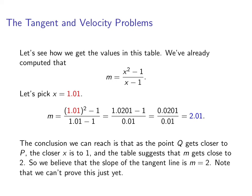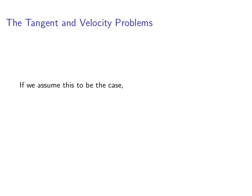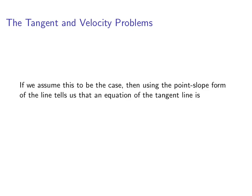Now we can't prove this just yet. Now if we assume, in fact, that the slope of the tangent line is 2, then we can go ahead and use our point-slope form of the line to get us an equation of that tangent line. And it's going to be y minus 1 is equal to 2 times x minus 1. So we're using the slope and we're using the point. The point was 1 comma 1. Okay, that's all for now.